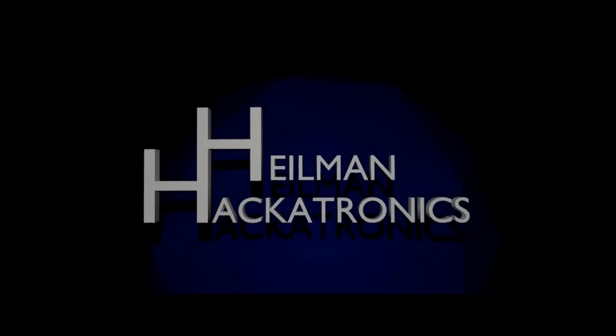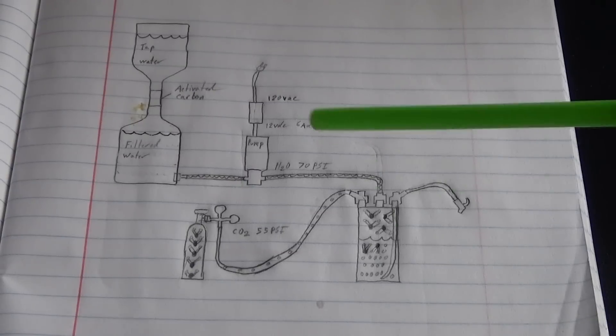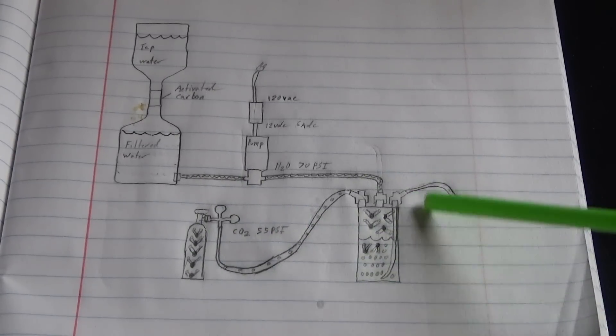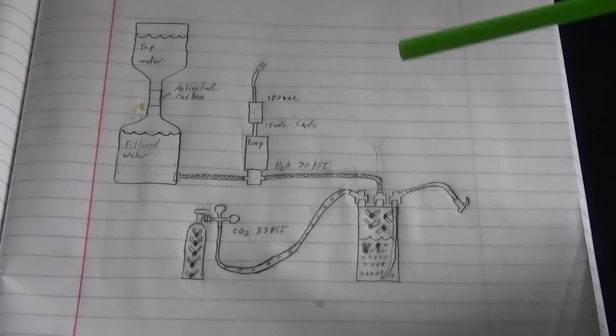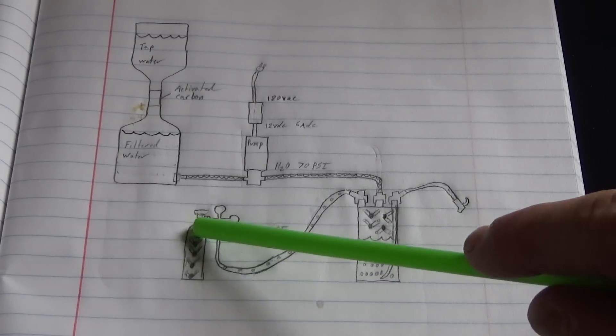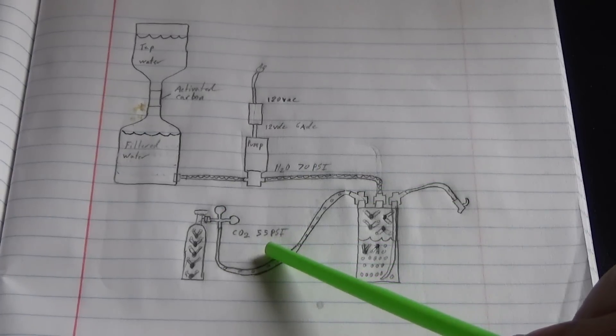A few weeks ago we built a carbonated water system. We purchased a five pound CO2 tank and a keg. We filled the keg with purified water. It's a five gallon keg and then we just turned on the CO2 tank which is regulated at 55 psi roughly.